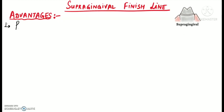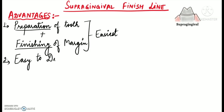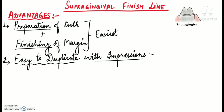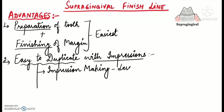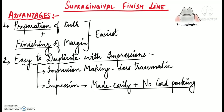Let's talk about the advantages of supra-gingival finish lines. The preparation of tooth and finishing of the margin is easiest with supra-gingival finish lines. It is very easy to replicate or duplicate the finish line with impressions. Impression making is less traumatic for the soft tissues, and impressions can be made easily with minimal or almost no cord packing. The impressions can even be removed past the finish line without tearing.